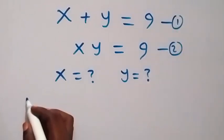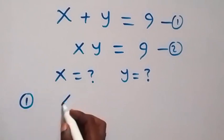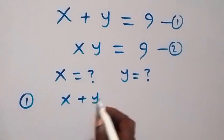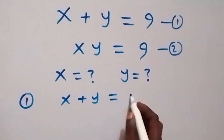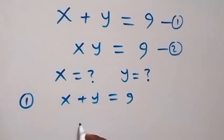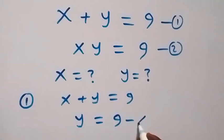From equation 1, we have x plus y equals to 9. And from here, let's take x to this side. That is, we have y now equals to 9 minus x.